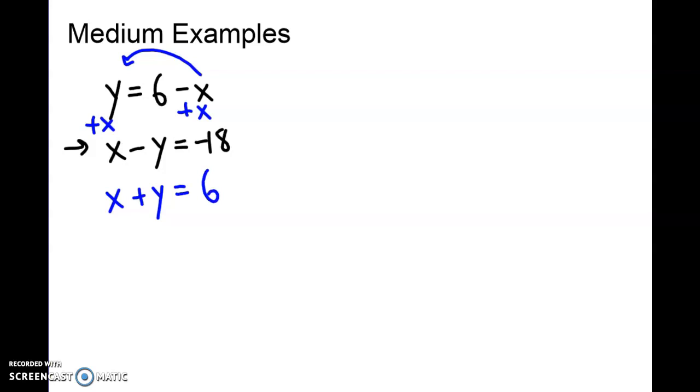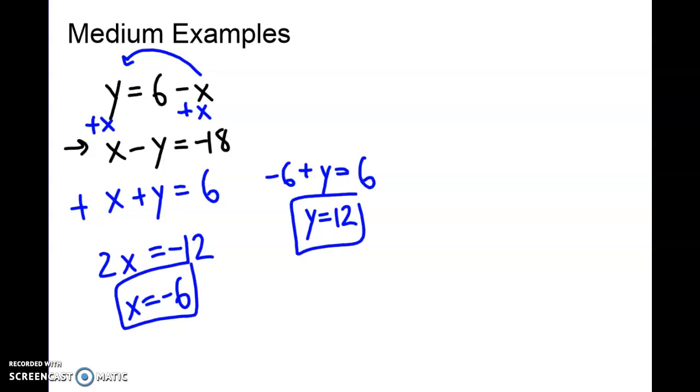I just had to bump something over, and now I'm back where I was earlier where I can add the two equations together. I have 2x equals negative 12, x equals negative 6. I can plug that into either equation. So negative 6 plus y equals 6, add 6, y would have to be 12. That's a medium equation where I have to do a little bit of work.